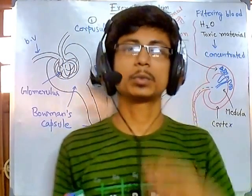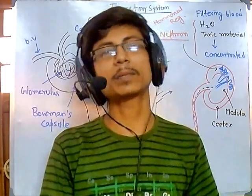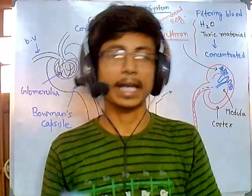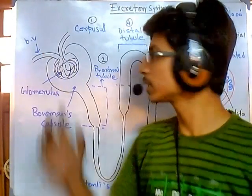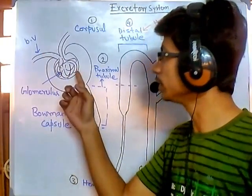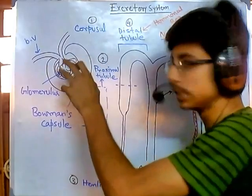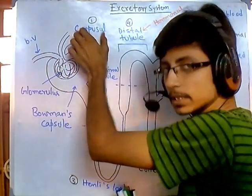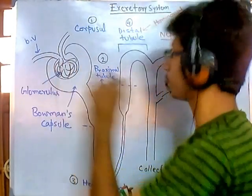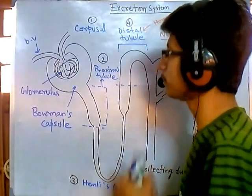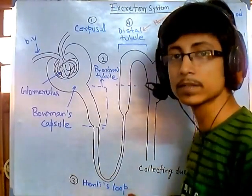The first task is to filter out the blood — to filter toxic materials out of the blood. That particular task is achieved by the glomerulus and Bowman's capsule together, and together they are called the corpuscle. The corpuscle does the most important first part here: selecting out those toxic materials from the blood.